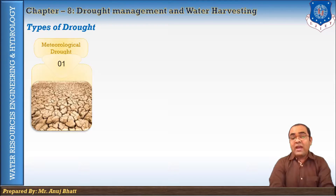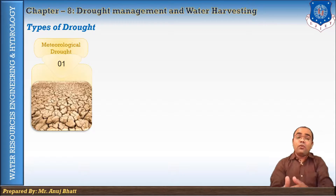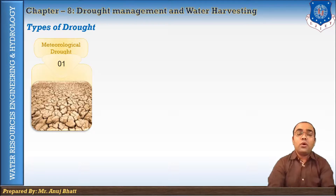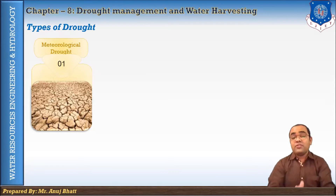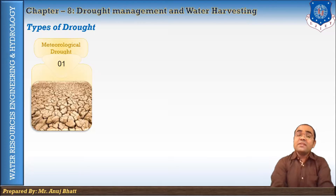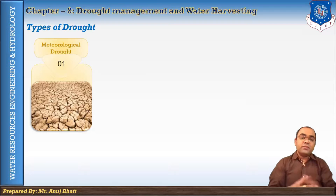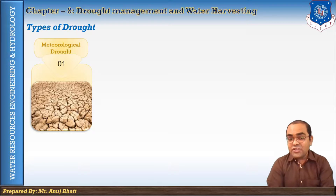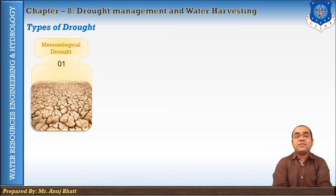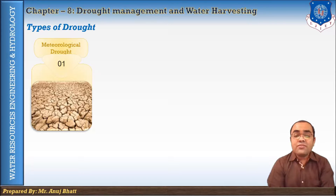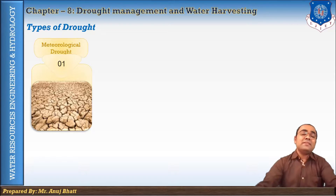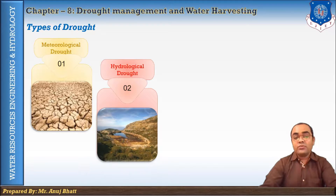We only consider the reduction in rainfall amounts and don't take into account the effect of the lack of water on water reservoirs when defining meteorological drought. It usually precedes other kinds of drought. Intensity and duration are the key characteristics of meteorological drought.